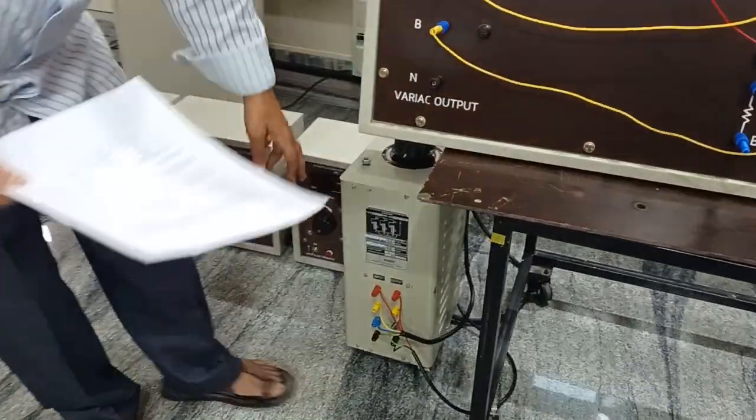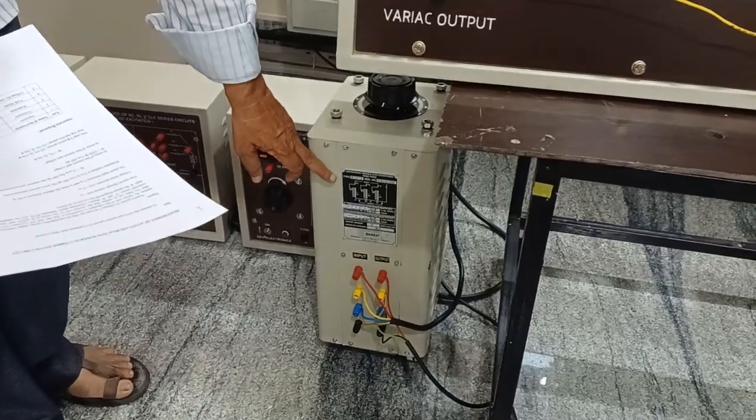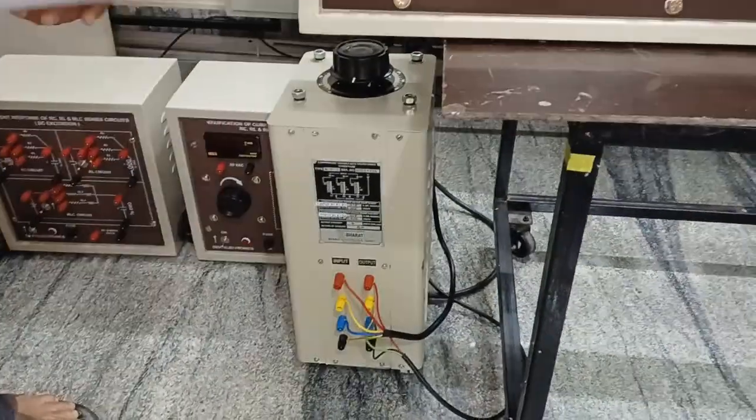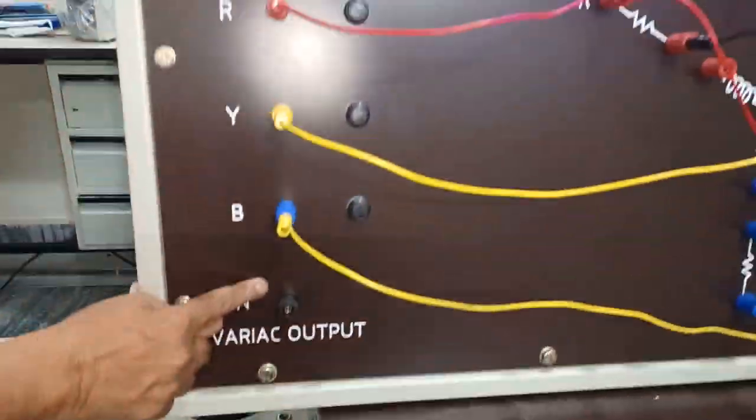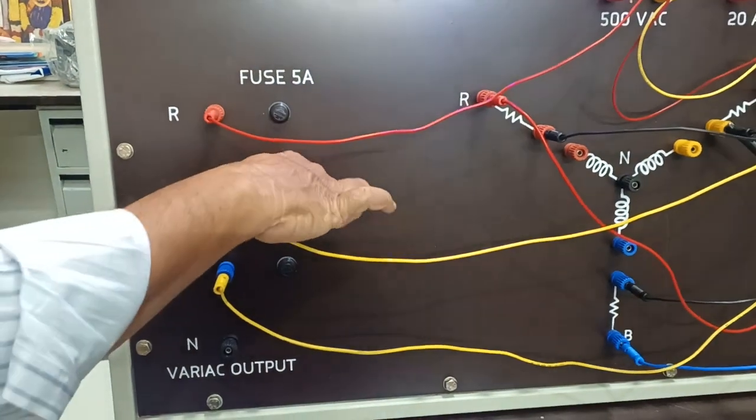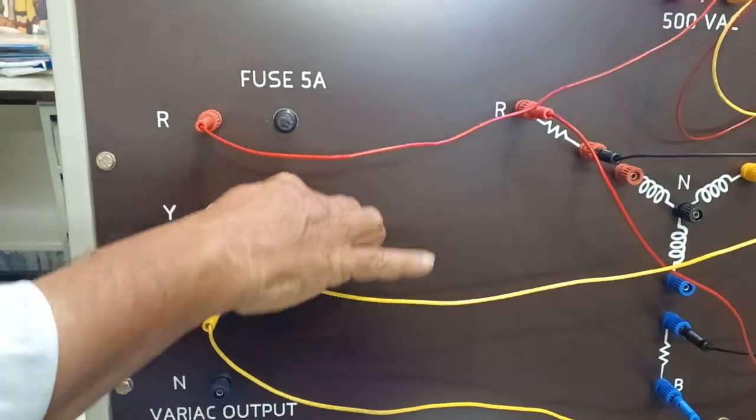The power supply is internally connected and we have one dimmer start to vary the input voltage. The dimmer output voltage comes here and the unit is protected by three fuses for all three phases.